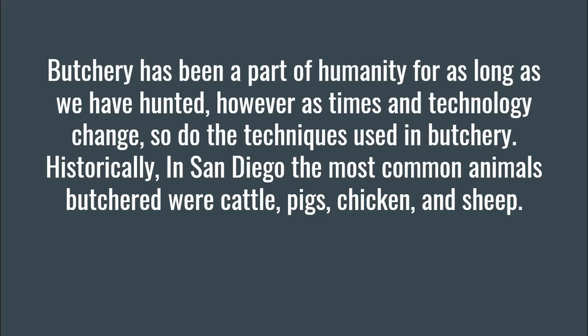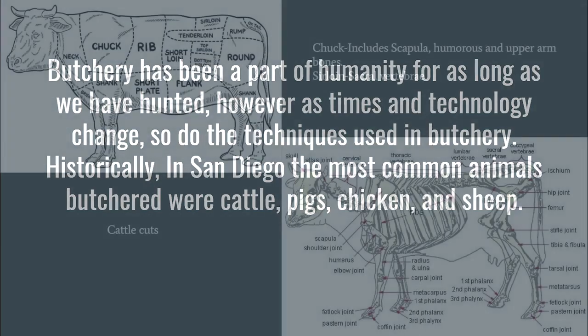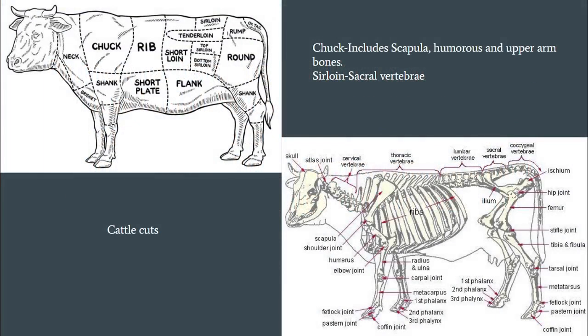Historically in San Diego, the most common animals butchered were cattle, pigs, chicken, and sheep. Here on the top left, we can see a diagram of the most popular cuts of meat on a cow, and on the bottom right we can see what the skeleton looks like underneath. Some examples of bones you could find associated with cattle cuts would be scapula and humerus bones found in chuck cuts, and sacral vertebrae in sirloin cuts.